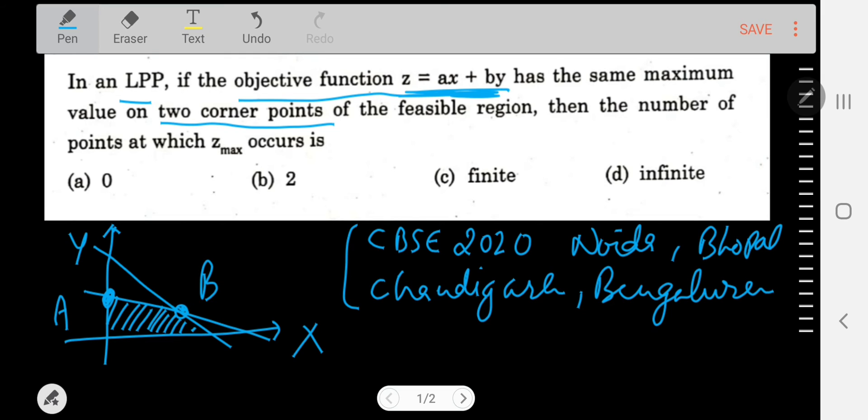Suppose the maximum value of z occurs at point A as well as at point B. So as per the question, the objective function has the same maximum value on two corner points, means at A and at B the value of z_max will be same and it will be maximum. So just keep in mind that